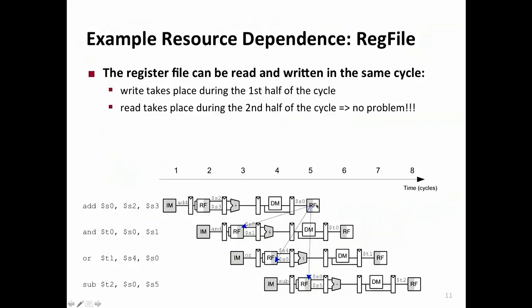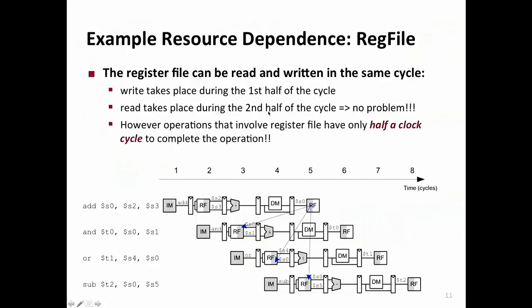Add actually produces its result on cycle 3, and the and actually needs that result in cycle 4. Because and happens in this ALU and add finishes in this ALU, if you can supply this result directly by forwarding it, this can be a correct execution order. We're going to assume that write takes place during the first half of the cycle and read takes place during the second half.